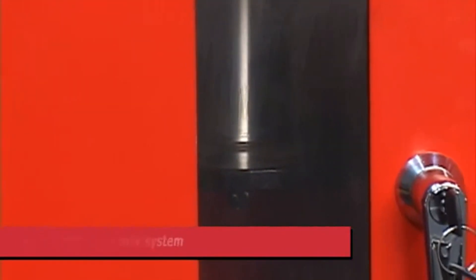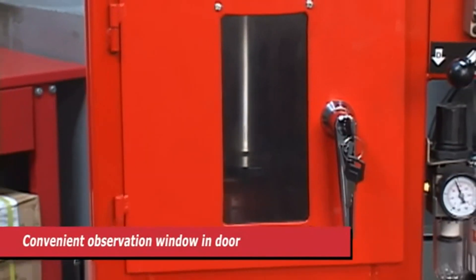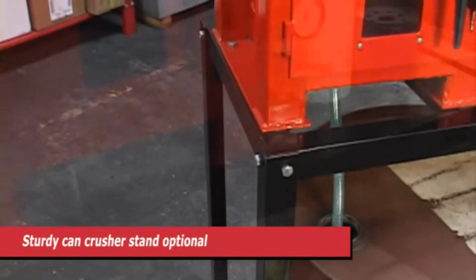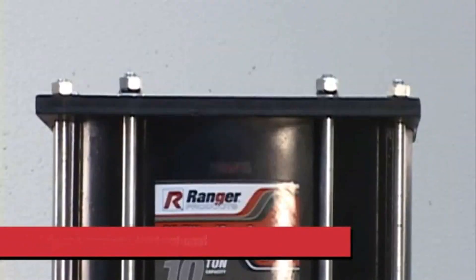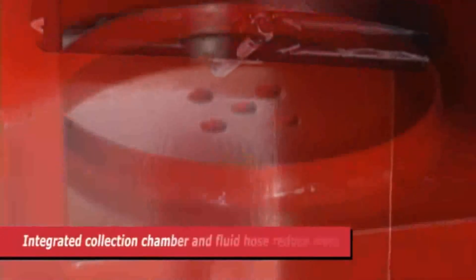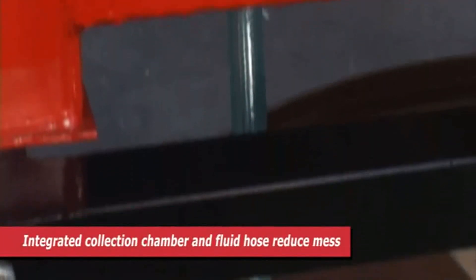However, you can still safely review crushing progress through the RP20FC's built-in viewing window. And for even more versatility, consider the optional Ranger Can Crusher Stand. From the astonishing 12.5 inch diameter cylinder to the exclusive pre-aligning X-shaped bevel design, down the convenient floor drain and all the way through the included fluid hose.